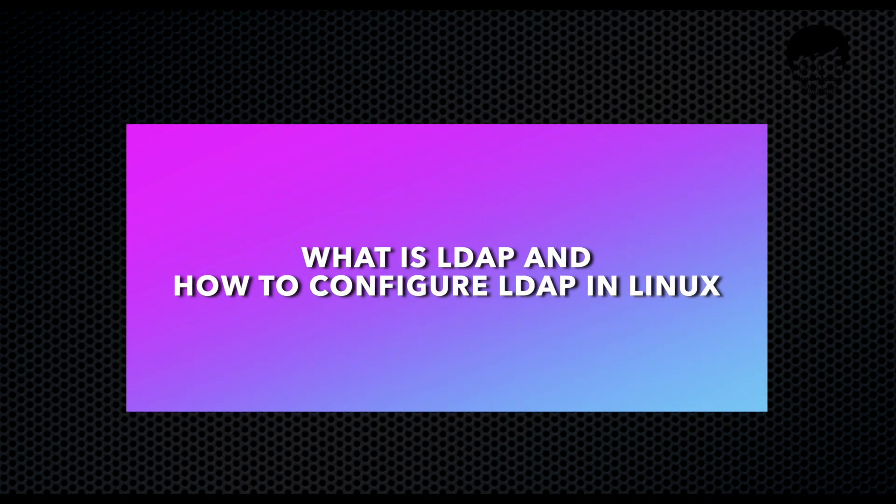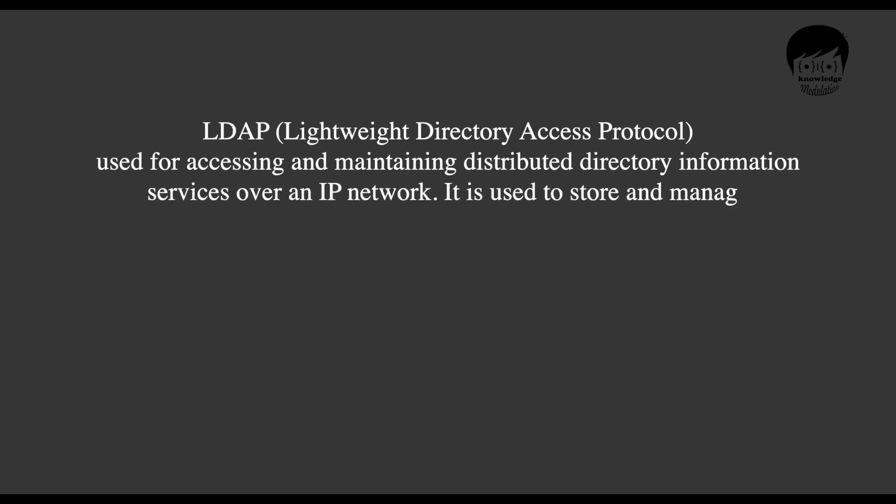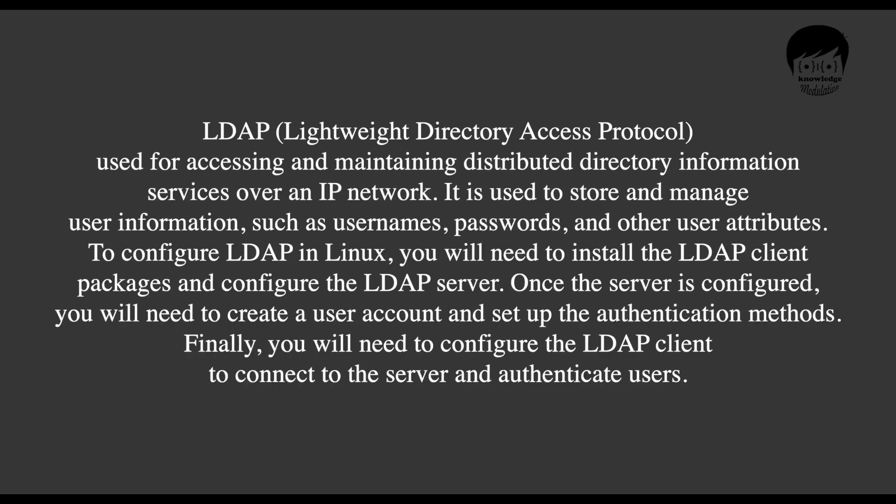What is LDAP and how do you configure it in Linux? LDAP is the Lightweight Directory Access Protocol, used for accessing and maintaining distributed directory information services over an IP network. It is used to store and manage user information such as usernames, passwords, and other user attributes. To configure LDAP in Linux, you install LDAP client packages, configure the LDAP server, create user accounts, set up authentication methods, and configure the client to connect to the server.